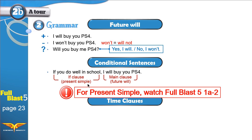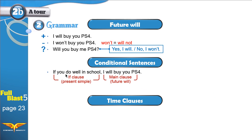If you forgot about present simple, I suggest you go back and watch the Fall Blast 5 1A2 video, where I go in depth with present simple. As a quick reminder: in present simple, we don't add -ing to the verb; we use it in the basic form. We add S to the verb if the subject is he, she, or it. For example: If he eats his food, I will take him out with me.